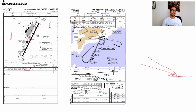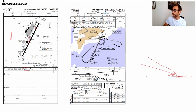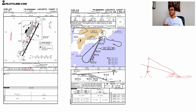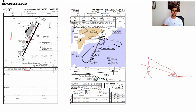Why do we have PAPIs that give a steeper descent? It's because at some airports you might have terrain on short final. By increasing the PAPI angle — let's say there's a mountain here on the whiteboard — if you keep at three degrees you might get too close to the terrain, so by increasing to 3.7 degrees you increase terrain clearance, making it possible to perform the approach while remaining clear of terrain.